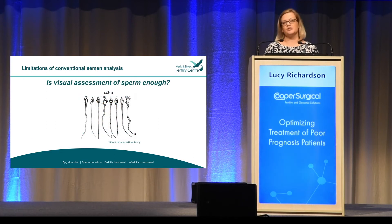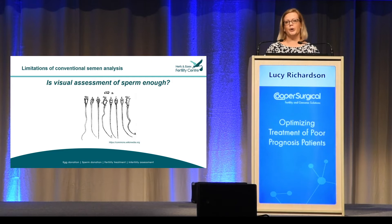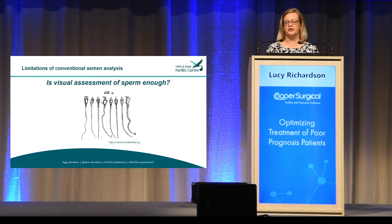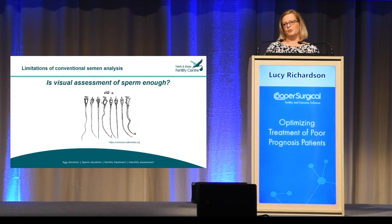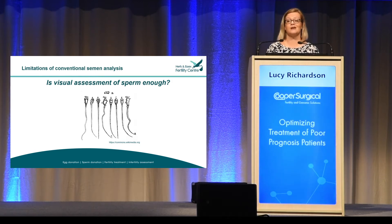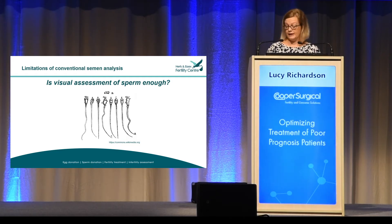Let's think about what we do in the laboratory. We know the egg has quite a robust system for selecting the better sperm. So what do we do in the lab? We look at the sperm, count the number of sperm, assess how many are swimming, and be quite critical about the morphology. But what does that tell us? To a degree, it tells us we can use that sperm sample in the laboratory — but it doesn't tell us anything about the physiological or natural ability of that particular sperm to fertilise an egg.